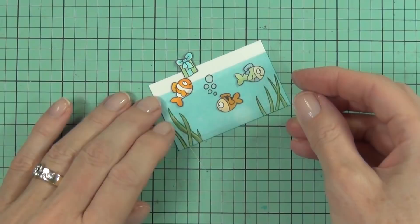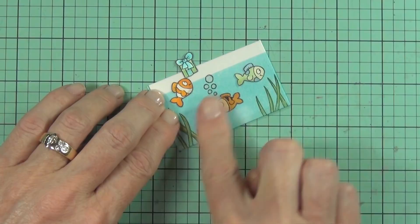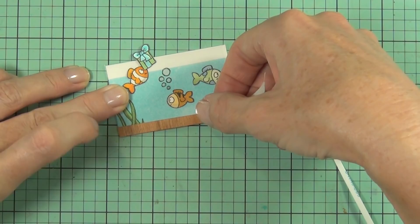Alright, so I've added some really thin Be Creative tape to the bottom of my fish tank and this is how I'm going to hold my piece of acetate in front. I just wanted it to look shiny like it's glass.